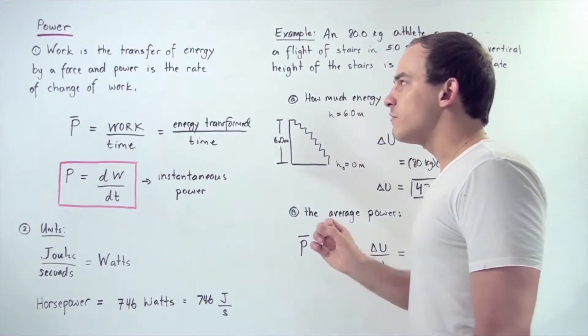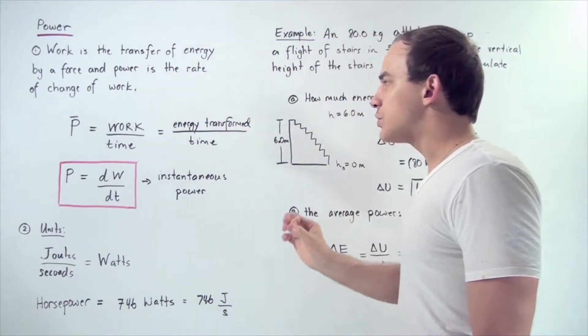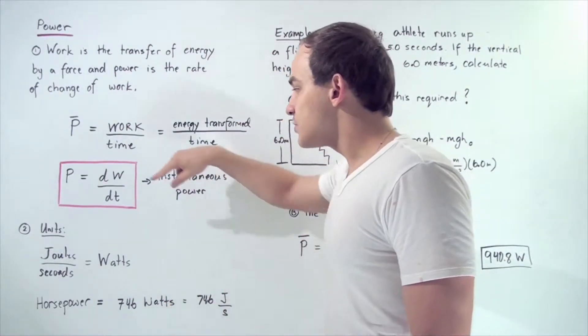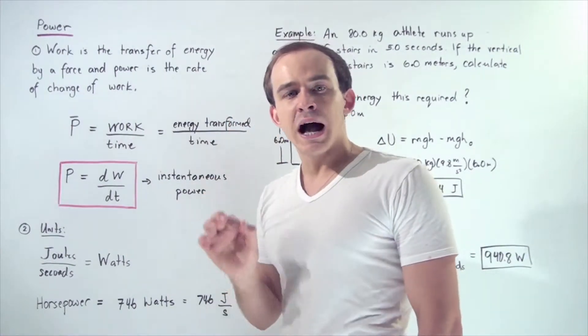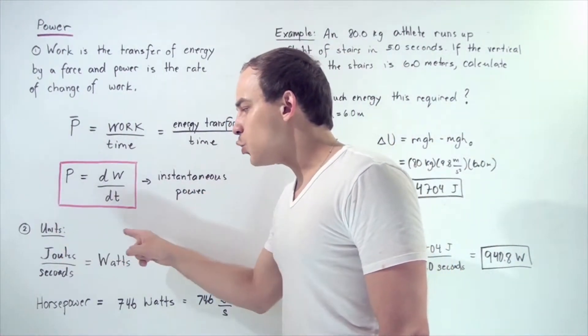What exactly are the units of power? Because work and energy have the units joules and time has the units of seconds, the units for power are joules per second, which is commonly known as a watt. One watt is one joule per second.